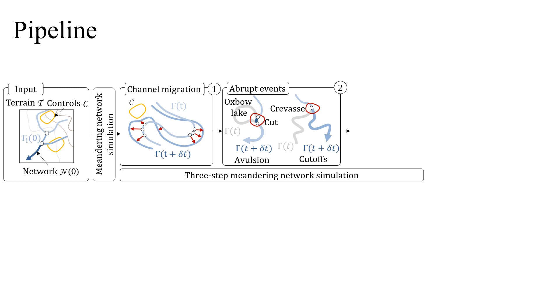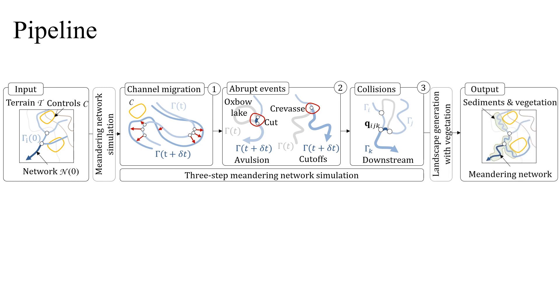Finally, we resolve collisions that may have occurred and optionally place procedural junction templates. While the simulation is running, we record all channel trajectories. This is useful for computing a procedural sediment cover and vegetation density that are later used to enhance the input terrain.